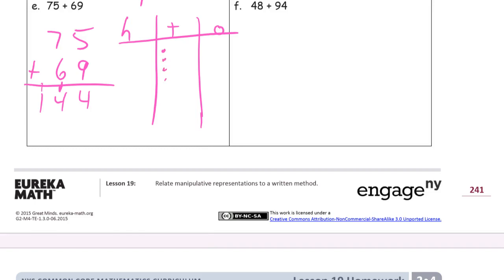75 is 7 tens and 5 ones. And 69 is 6 tens and 9 ones. 10 ones makes a 10. 10 tens makes 100. We have 100, we have 4 ones, and 4 tens. That's your 144.